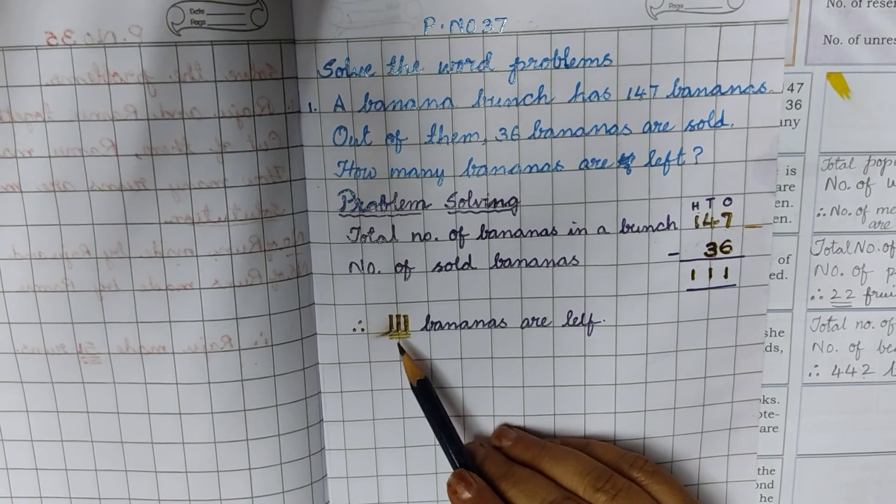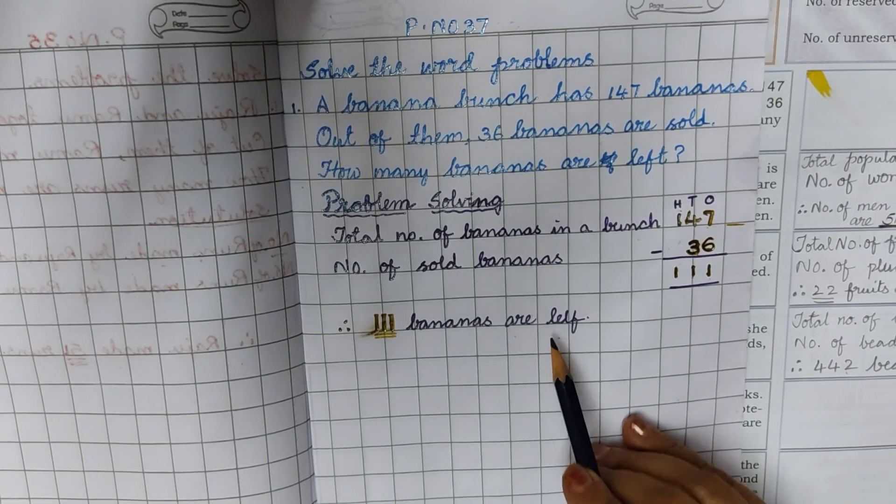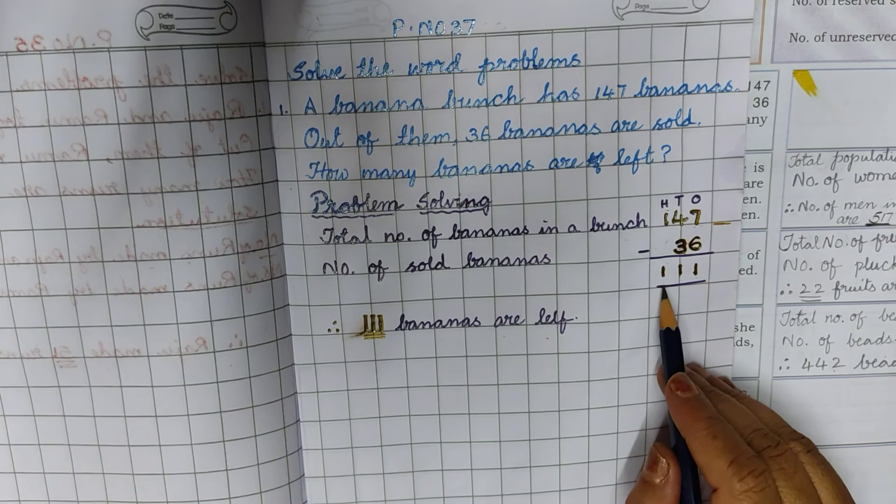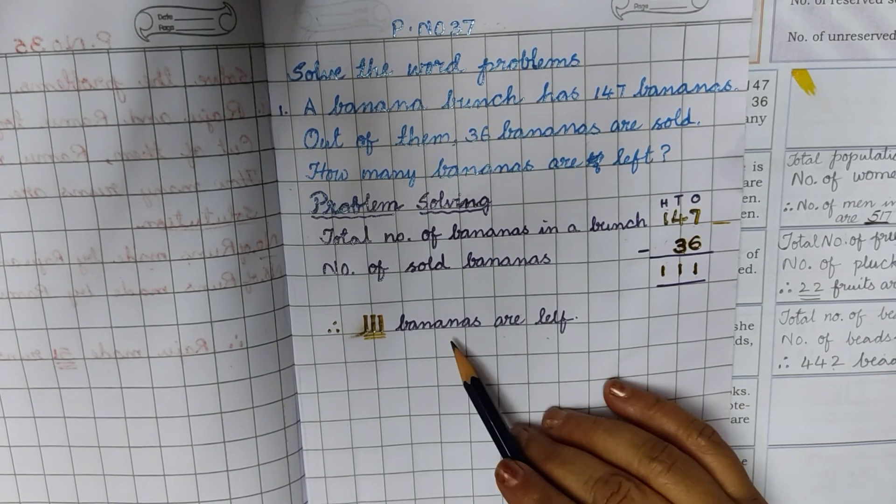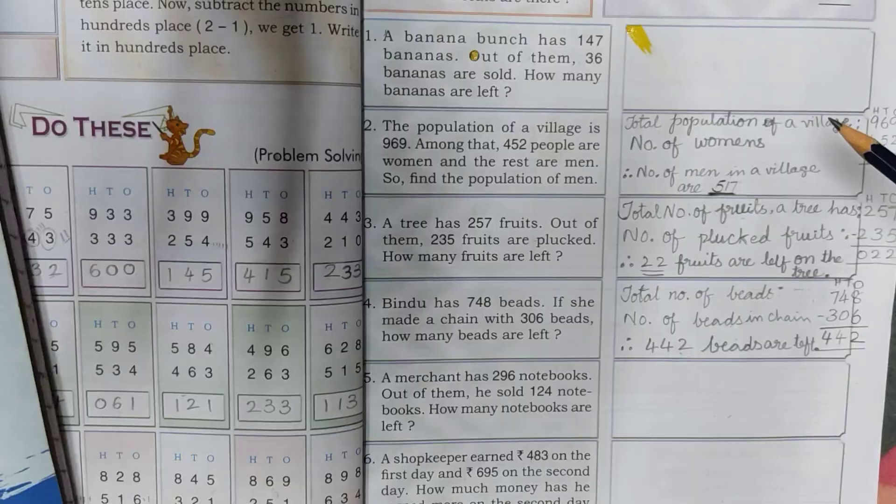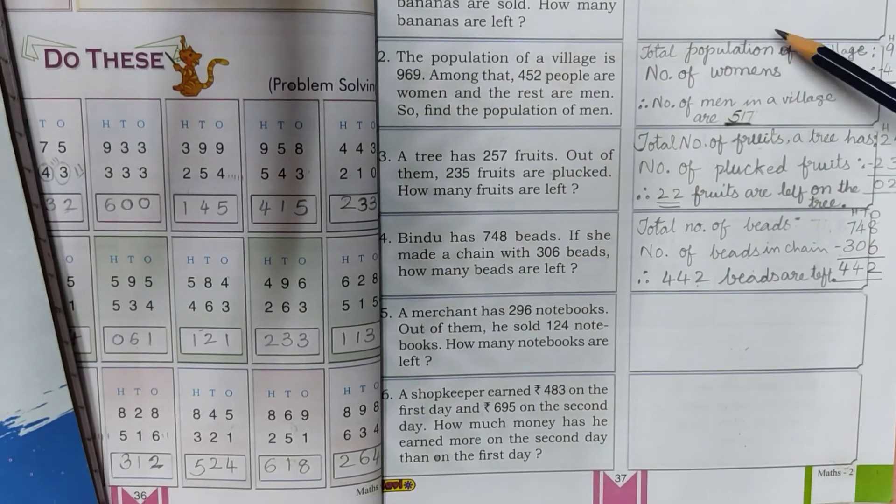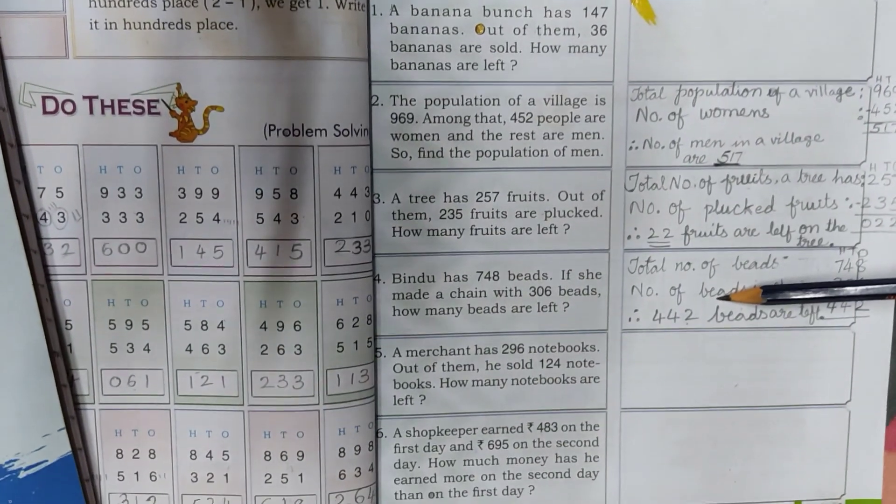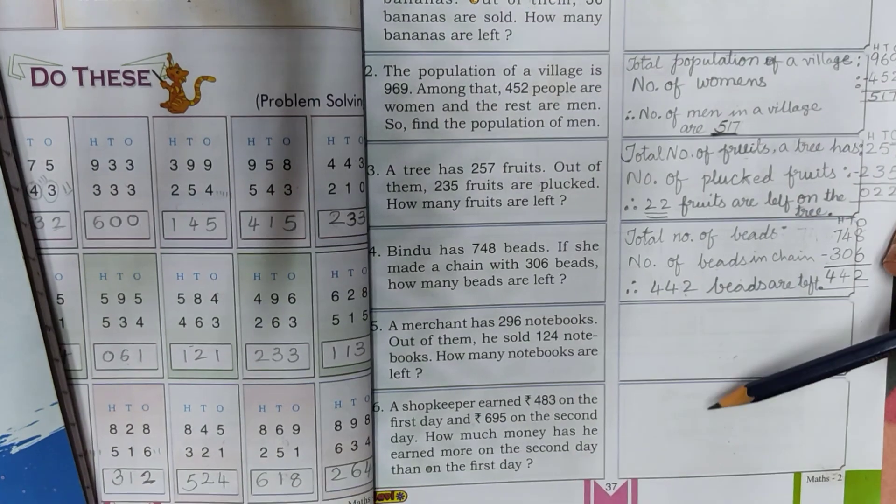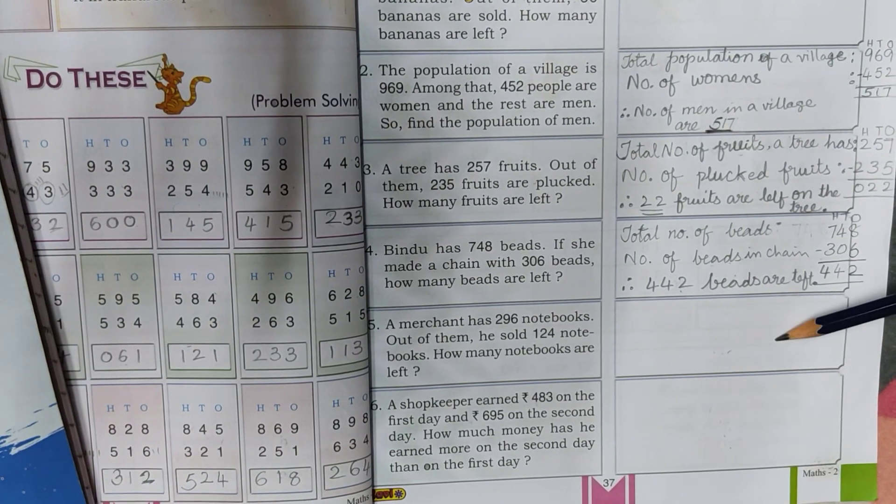Therefore, 111 bananas are left. How many bananas are left? 111 bananas are left. Students, copy down this 1, 2, 3 problems in your classwork book and solve these 2 problems in textbook only.